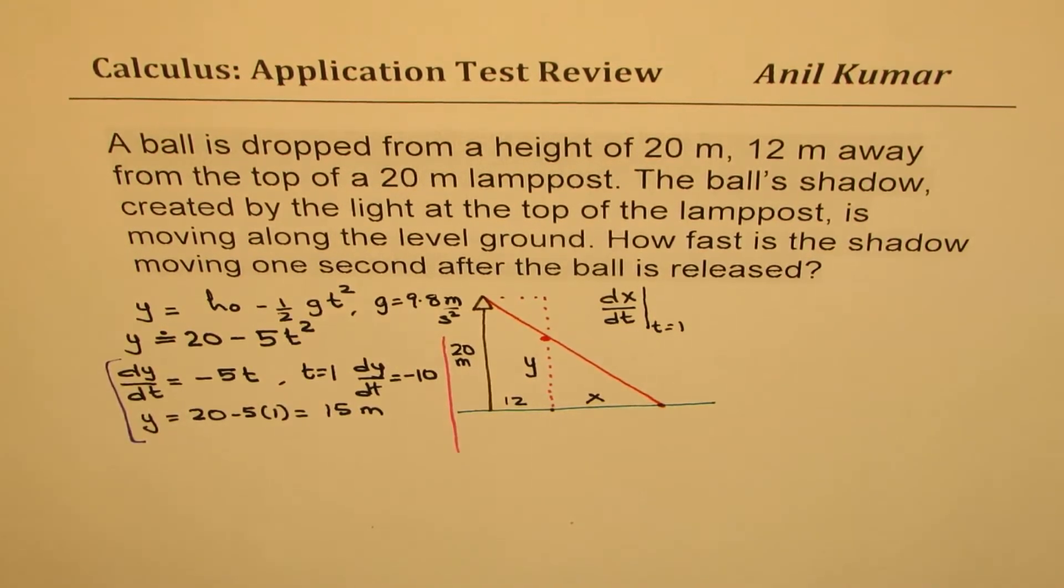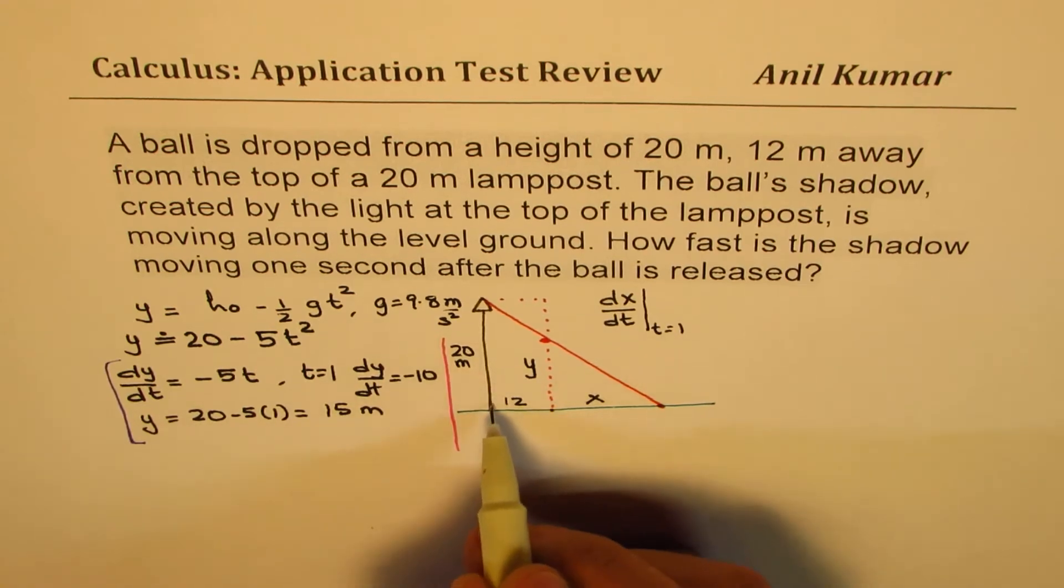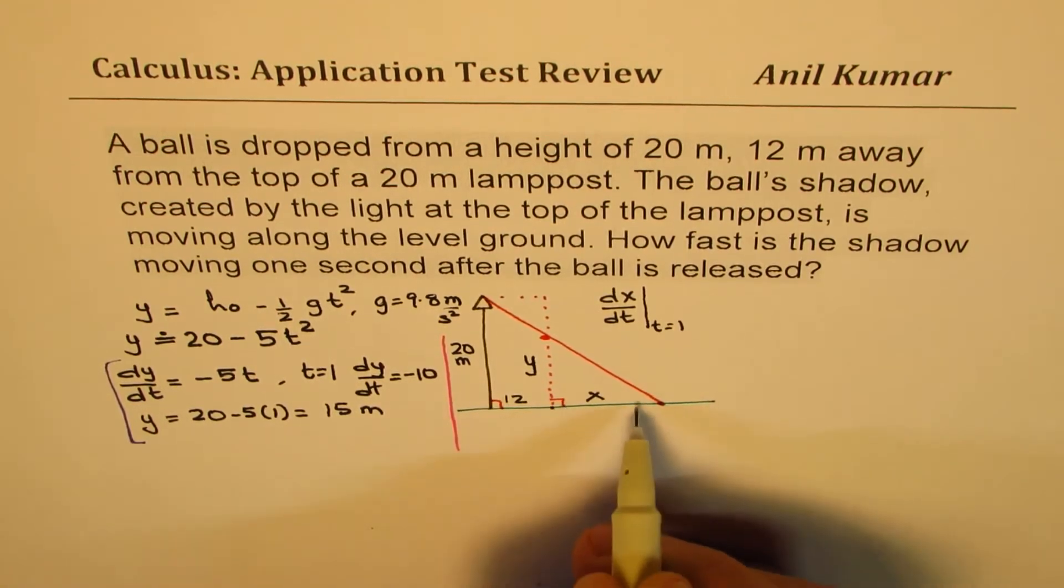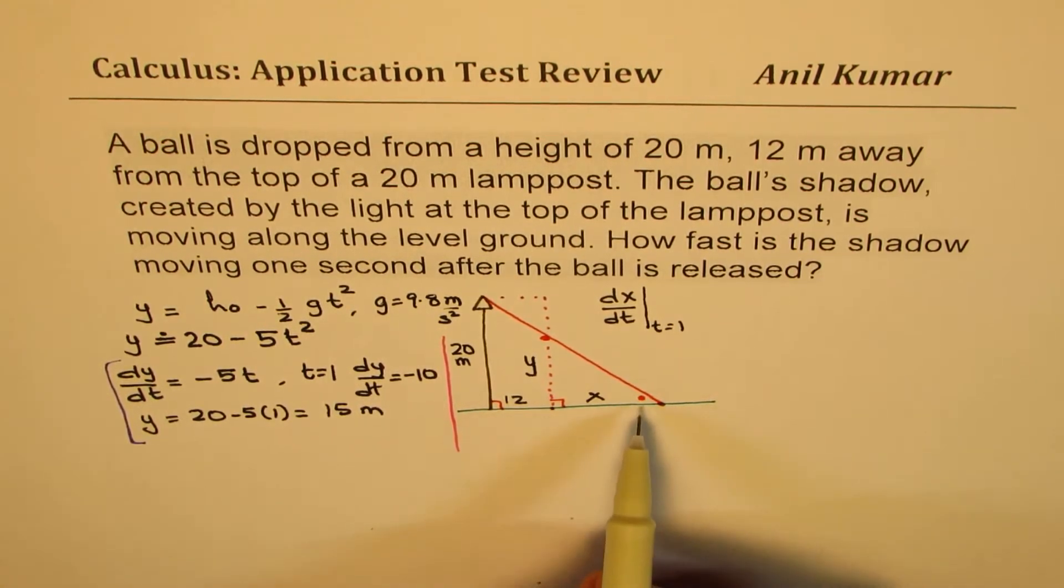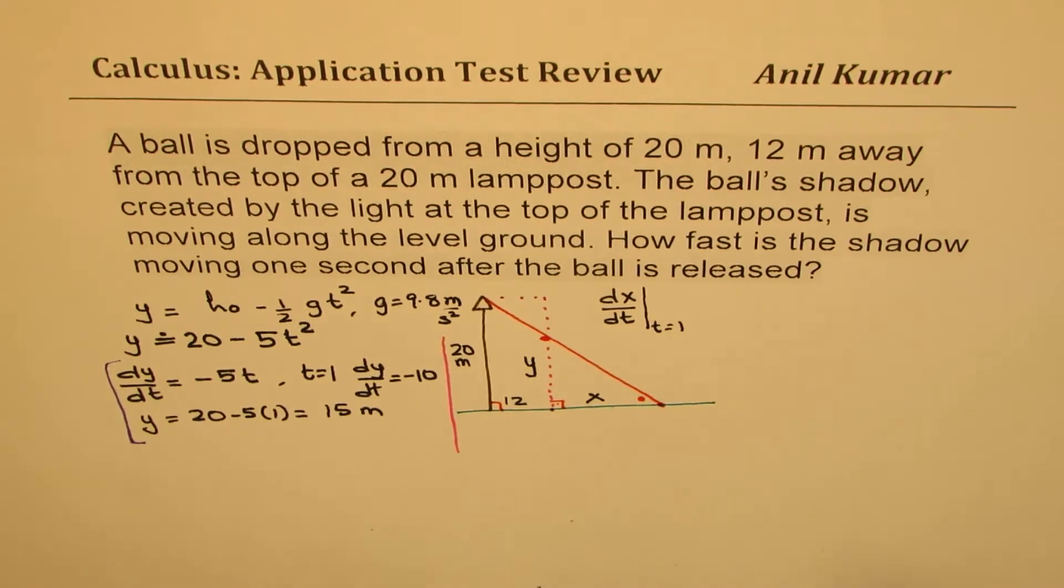Now the main thing is left, and that is to relate x and y to get our equation. So how do we do that? Whenever you find triangles like this, you can say they are similar triangles since they have common angle and right angle. So this big triangle and that small triangle are similar. That gives you the required equation.